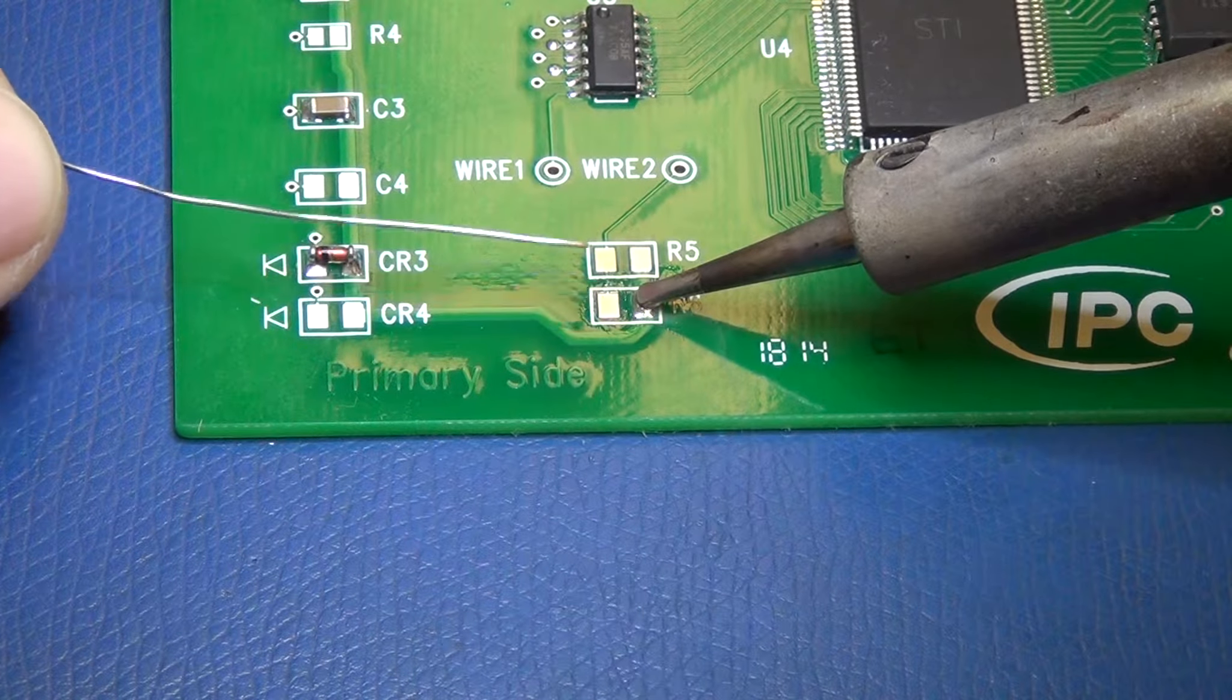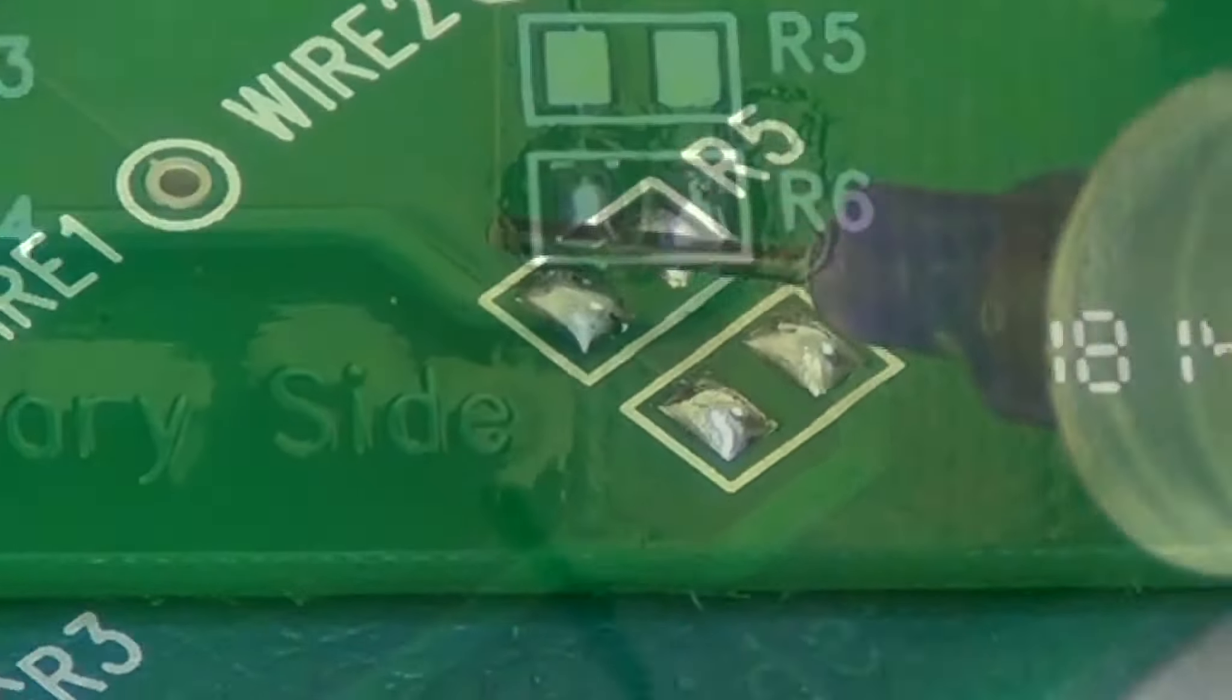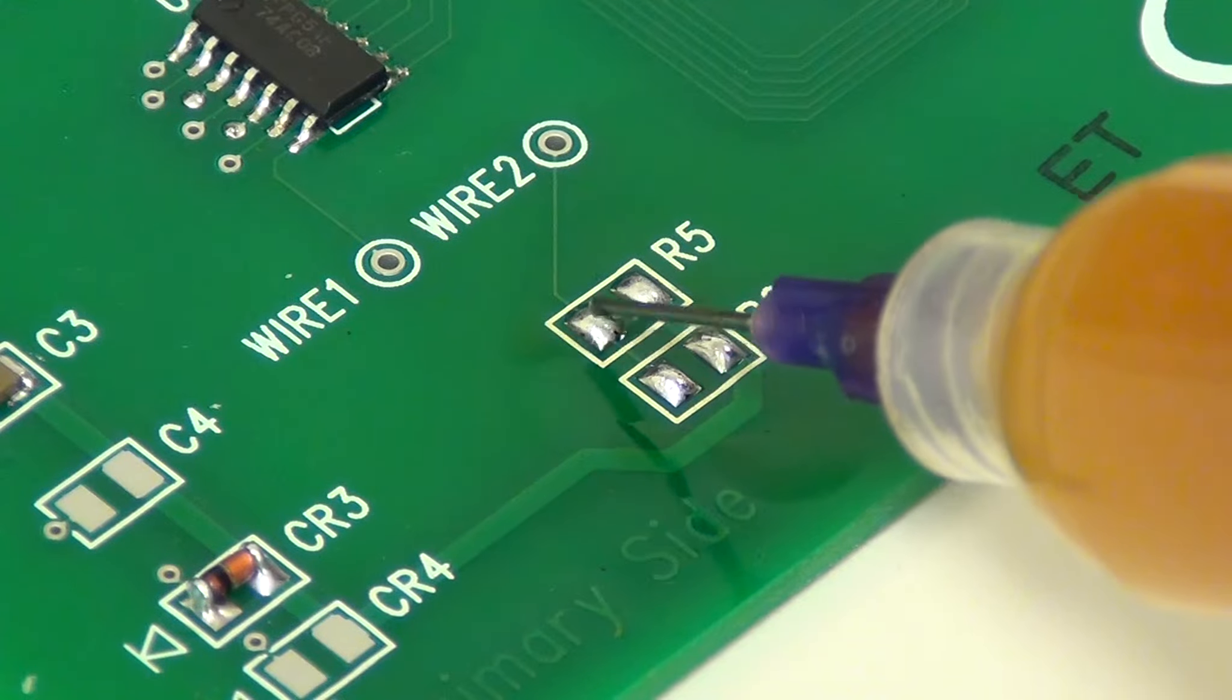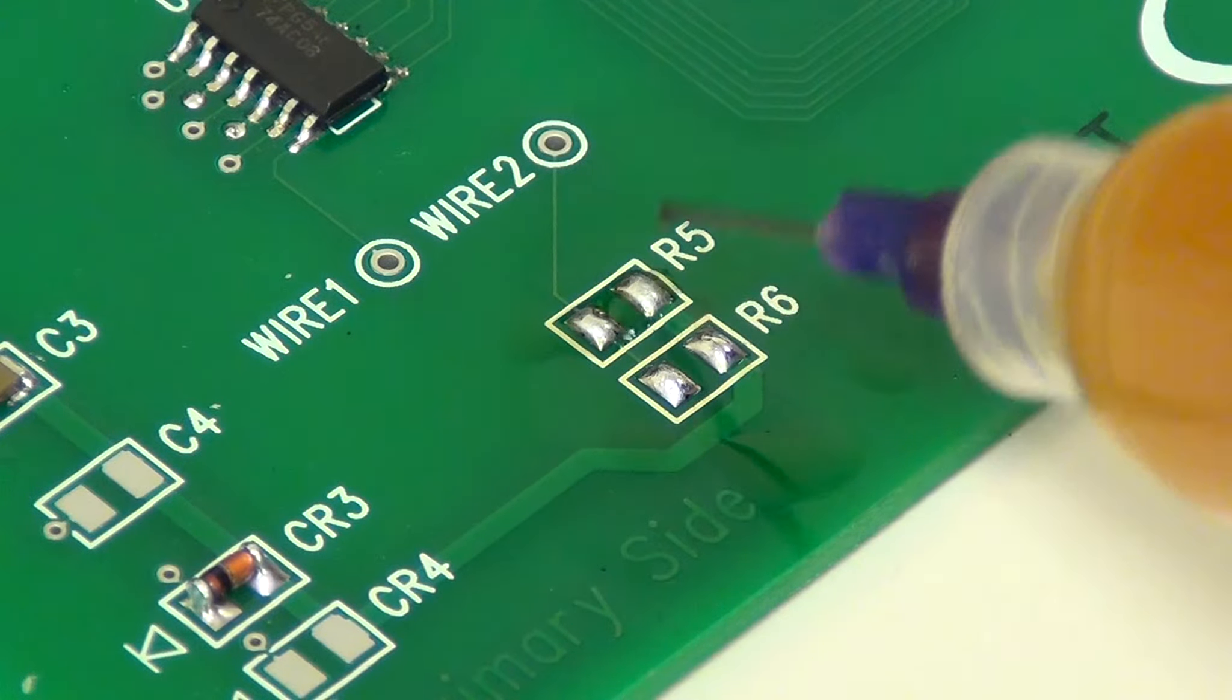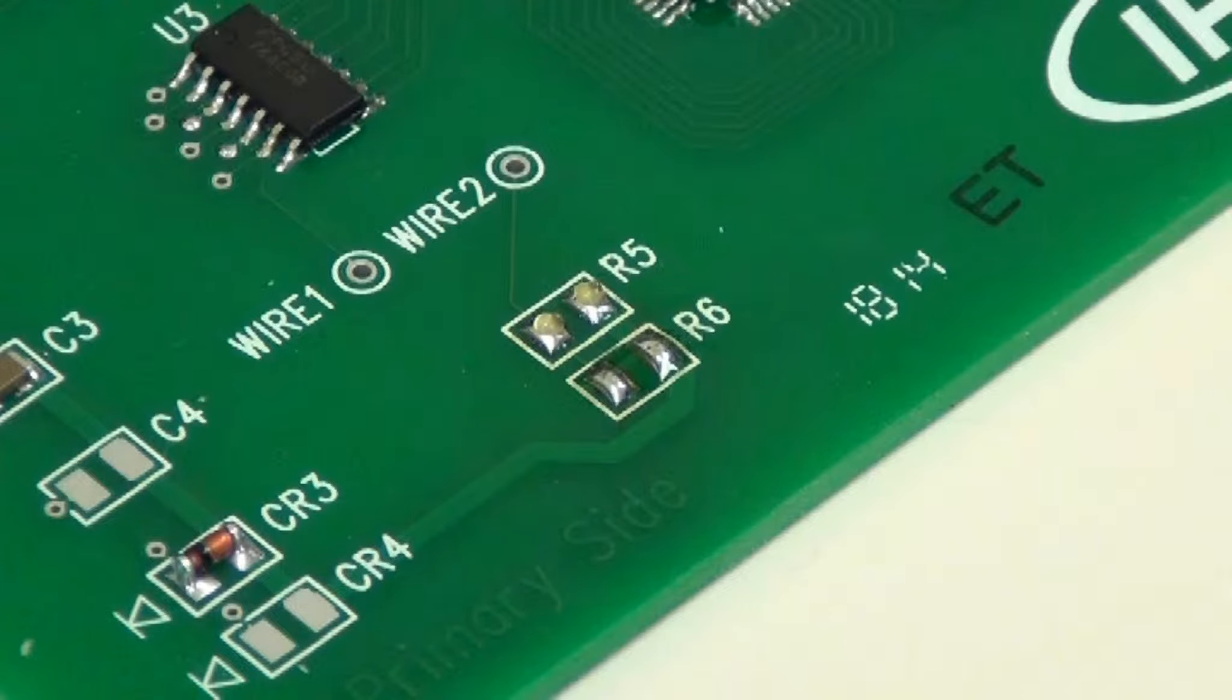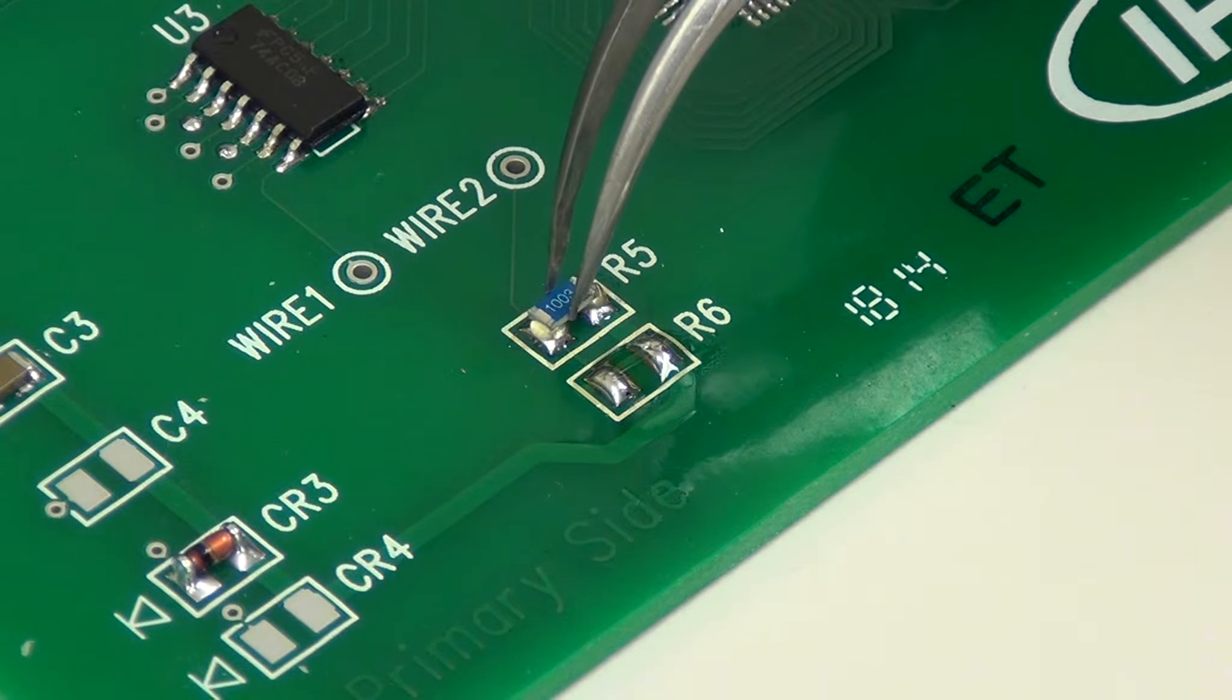First, we need to apply solder bumps to both lands on the board. After cleaning, we'll apply some flux. Tacky flux will work the best for holding the component in place. Now we'll carefully place the component on top of the solder bumps, placed as accurately as possible.